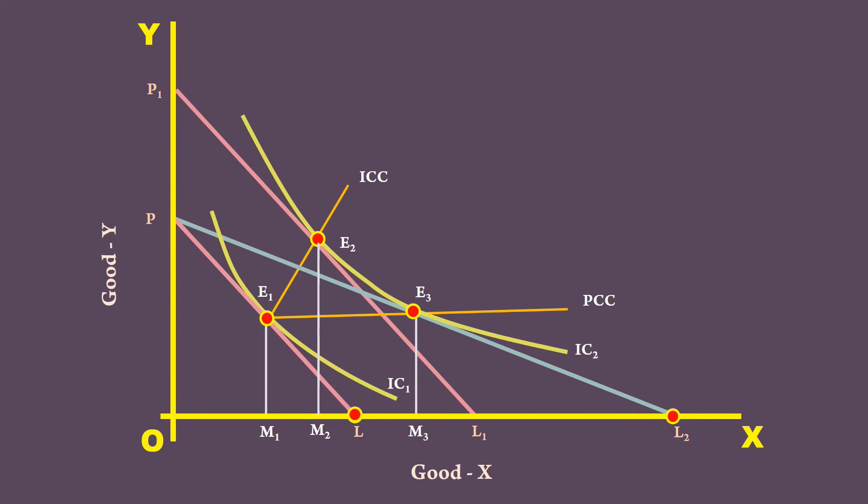At last, we shall have it like this. M1-M3 net increase is due to price effect. Of this, M1-M2 net increase is due to income effect. And M2-M3 net increase is due to substitution effect. Before I conclude, let me tell you one thing.